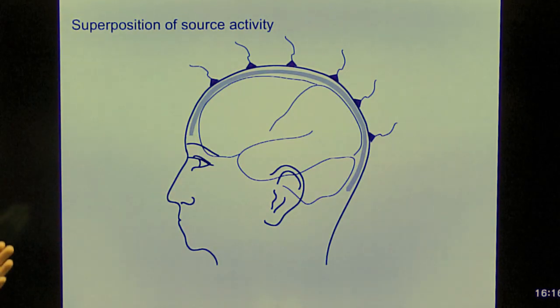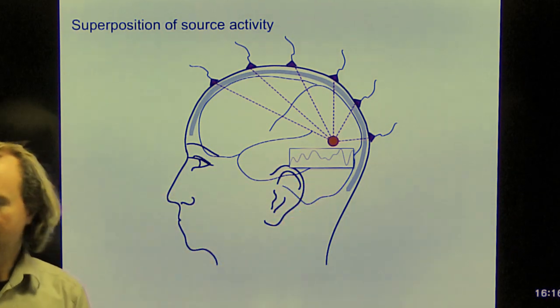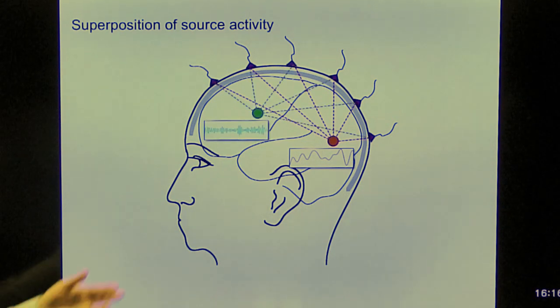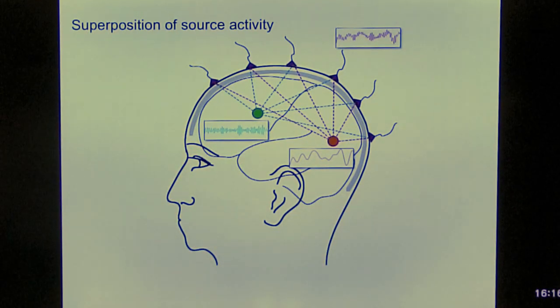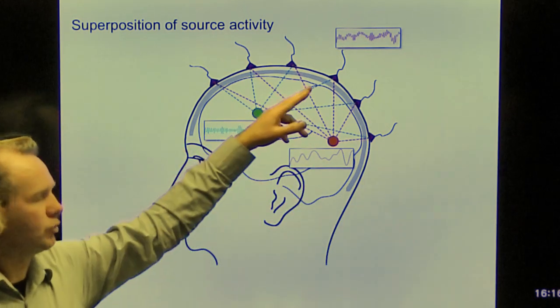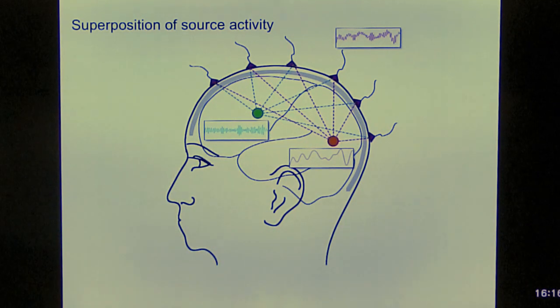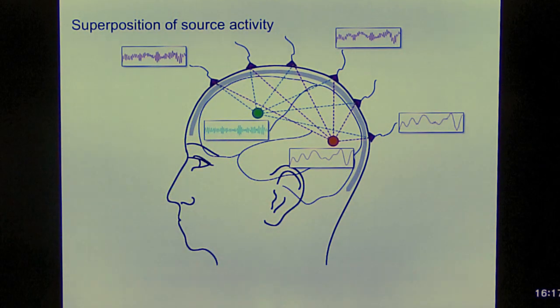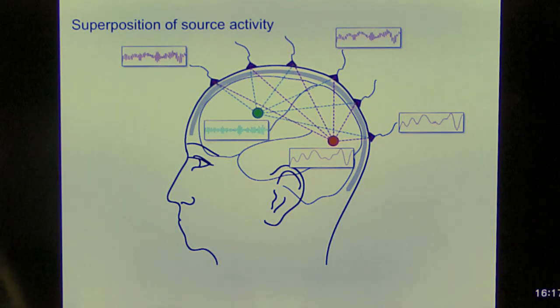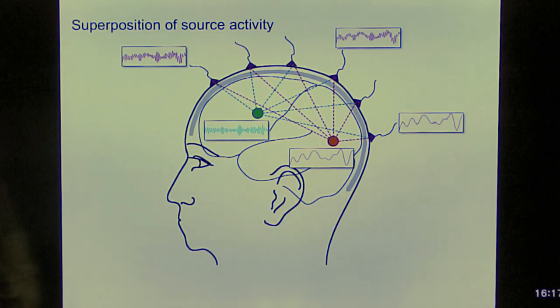But it is very important to realize that if we have a source somewhere in the brain, then that source has a certain time course associated with it, and another source might have another time course associated with it. So if we now look at a channel that's more or less in between, the channel is going to see both sources. So spatially both sources project onto this channel, and the time course of the channel is going to reflect both sources. Channels that are close to this source will mainly show this activity and vice versa here. So the consequence for the data is that the data is an overlap, is a superposition of the time series of the different sources.